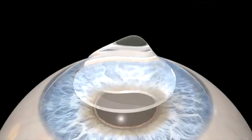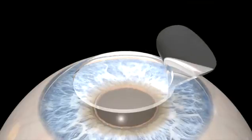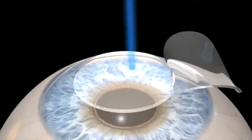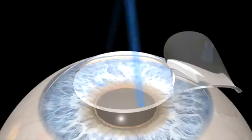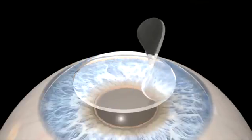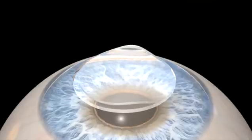The corneal flap is then folded back. Using measurements from your eye's corneal curvature and biomechanics, the laser removes the corneal tissue necessary to correct your vision while creating a more natural, aspheric shape.